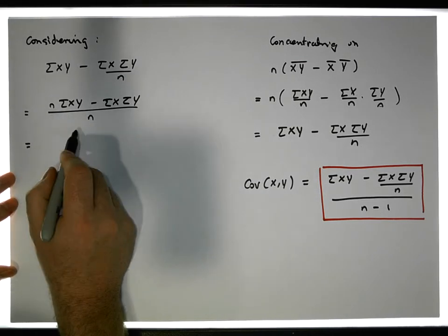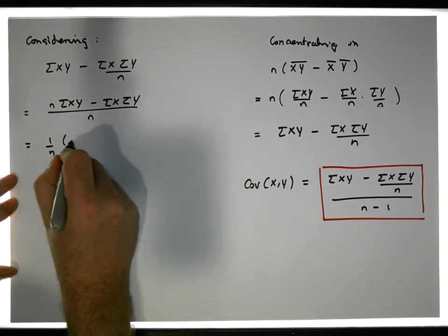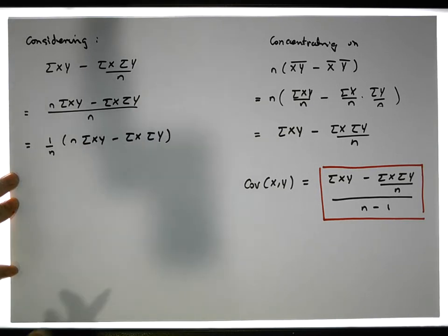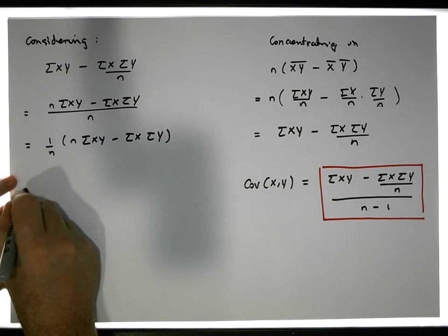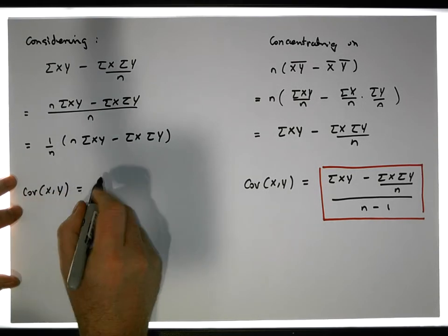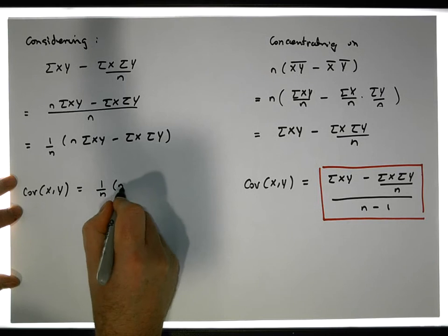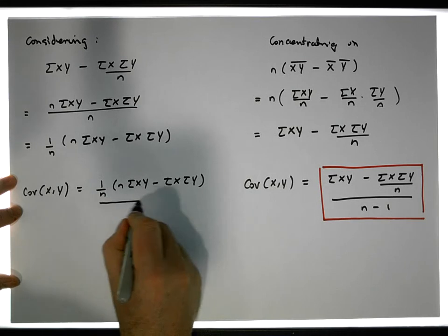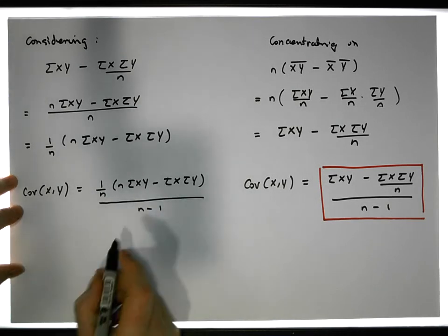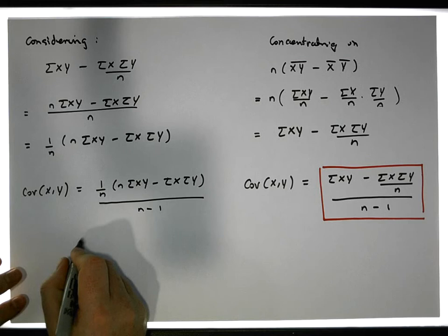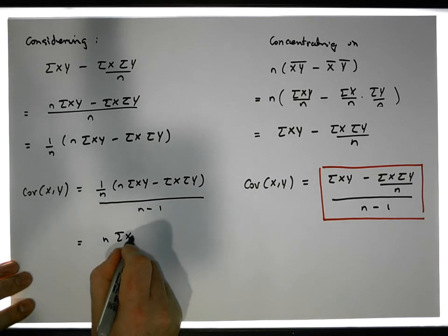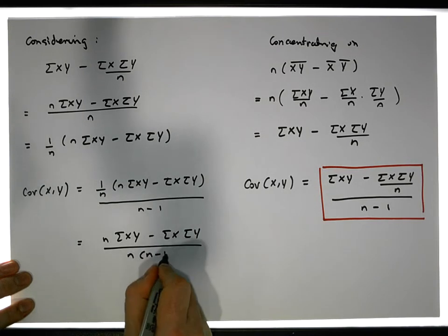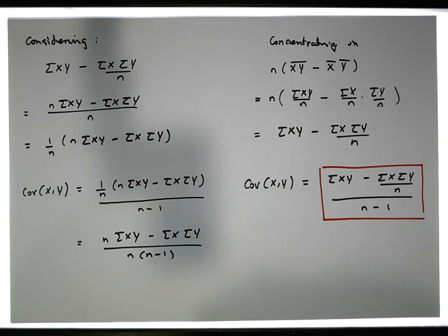This is one over n times the quantity: n times the sum of the x y's minus the sum of the x's times the sum of the y's. Substituting back in, the covariance of x and y equals one over n times that quantity, all over n minus one — which simplifies to n times the sum of x y's minus the sum of x's times the sum of y's, all over n times n minus 1.